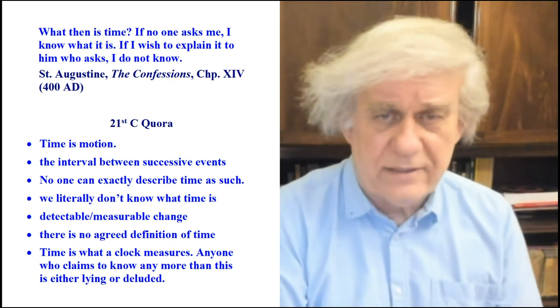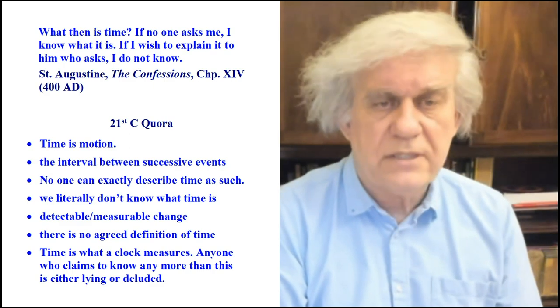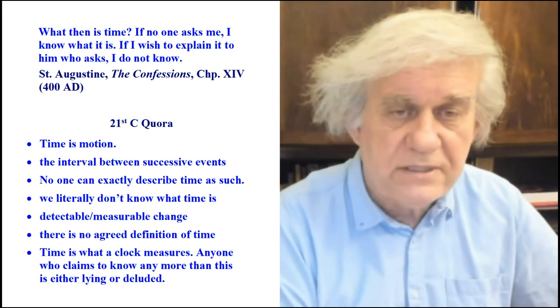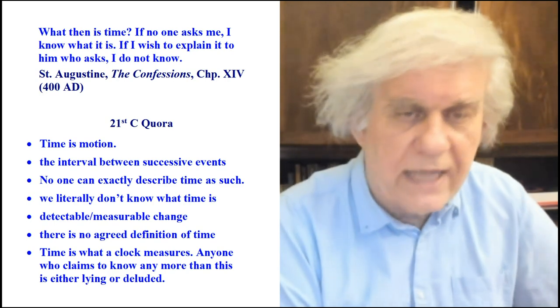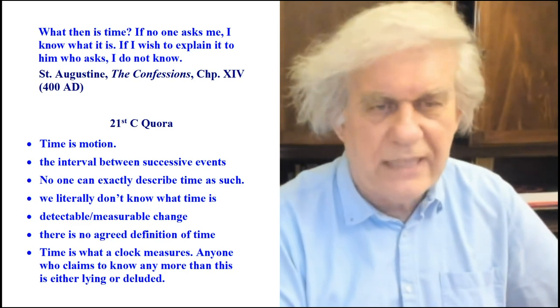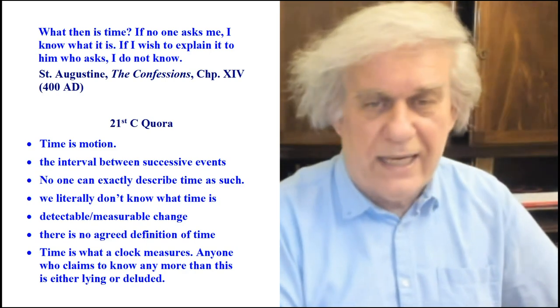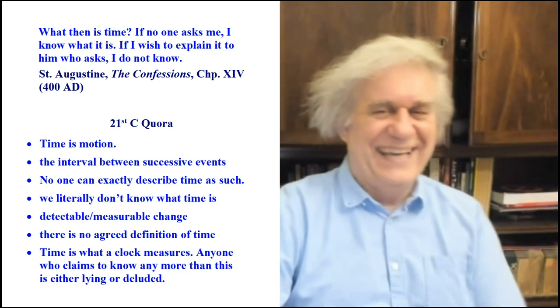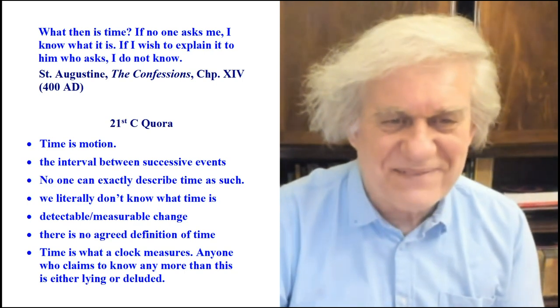Some Quora answers: 'Time is motion.' 'The interval between successive events.' 'No one can exactly describe time.' 'We literally don't know what time is.' 'Detectable, measurable change.' 'There is no green definition of time.' And finally: 'Time is what a clock measures — anyone who claims to know more than this is either lying or deluded.' None of these people have any idea what time is because they try to define it in terms of their religion or assumptions.